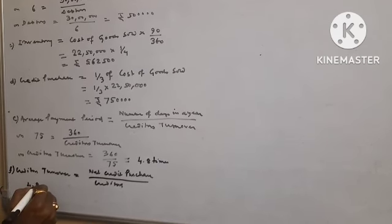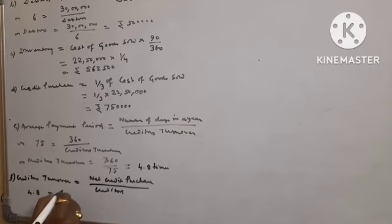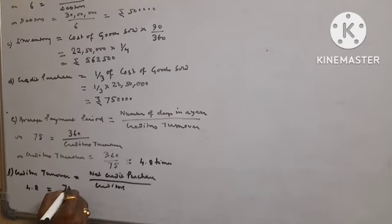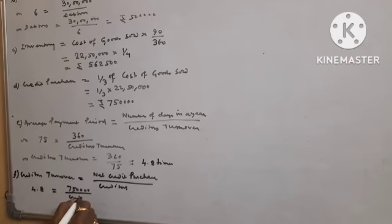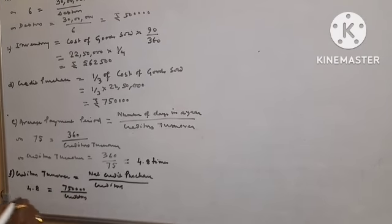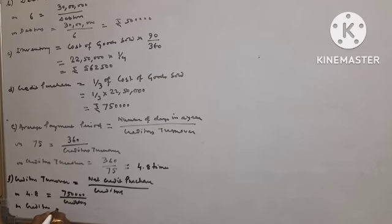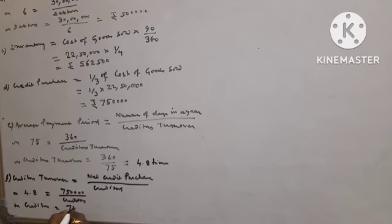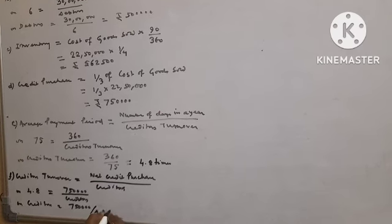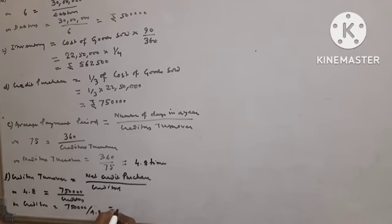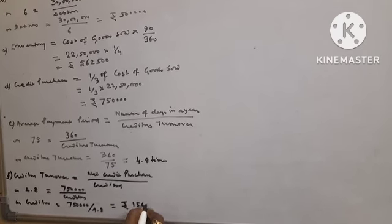Net credit purchase 7,50,000 divided by creditors. Creditors equals to 7,50,000 divided by 4.8 equals to rupees 1,56,250.